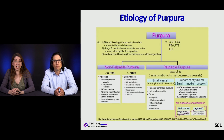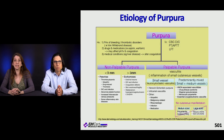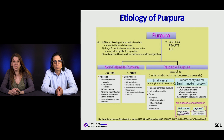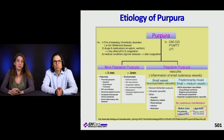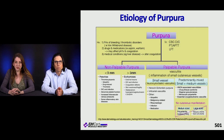This is a great diagram breaking down non-palpable purpura and palpable purpura. Palpable purpura points to vasculitis. Non-palpable purpura is divided into lesions less than 3 mm — petechiae — and greater than 5 mm — ecchymosis — with various etiologies for each.